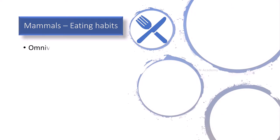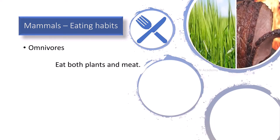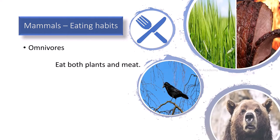Some mammals eat both plants and flesh. They are called omnivores. They have grinding teeth as well as sharp pointed teeth. Examples: crows, bears, etc.